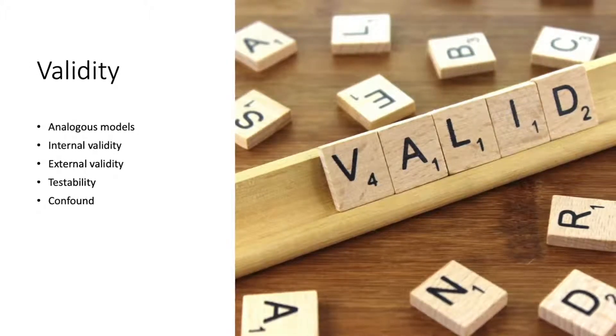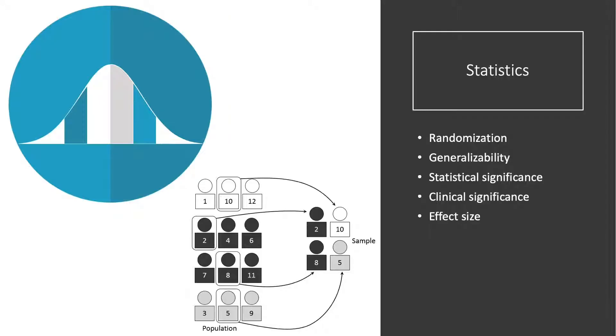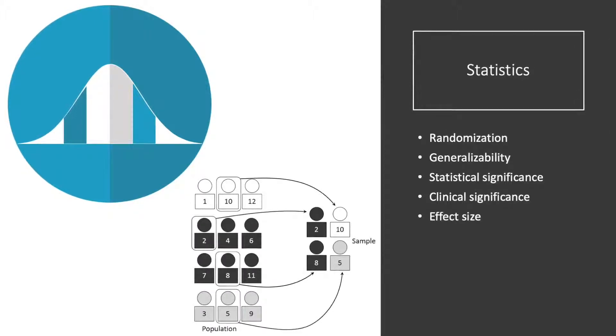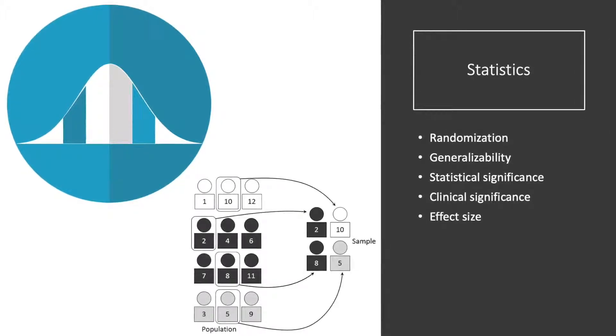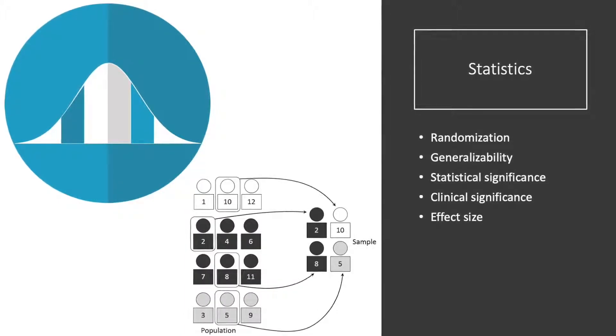A confound is a third variable that is hard to interpret, its effects or relations. Randomization is defined as assigning people to different research groups in which anyone has an equal chance of appearing in any group and this is done to cancel out these potential confounds.